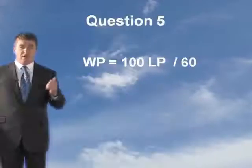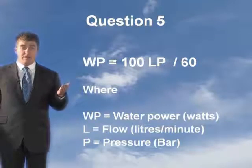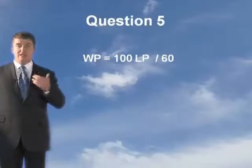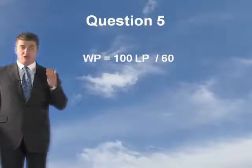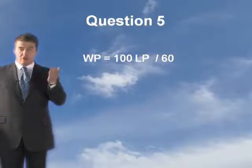Now what's the first thing we're going to do? We need to work out the pressure at the outlet. This is where you have to bring in another hydraulic formula: water power equals 100 LP divided by 60. WP is the water power, L is the flow in litres a minute, and P is the pressure. Using this formula, WP equals 100 LP divided by 60, we need to get P to be the subject of the equation, so you need to transpose it.